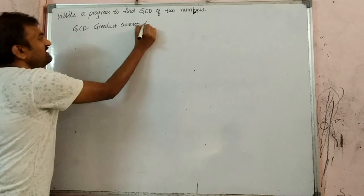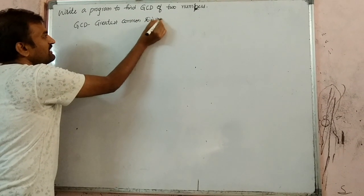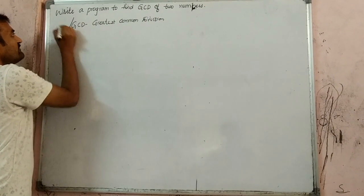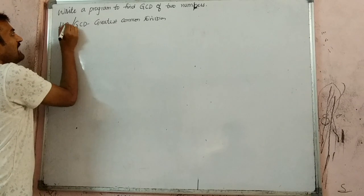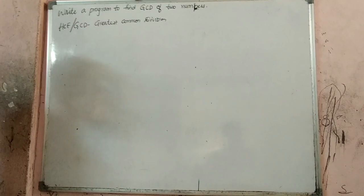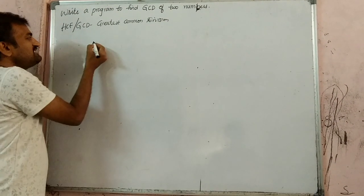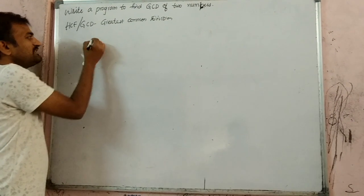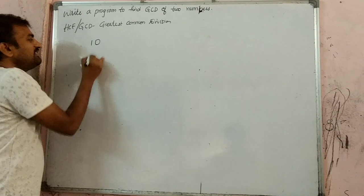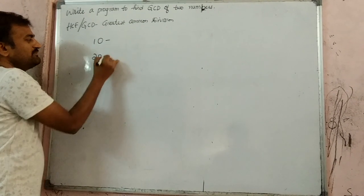So behind this, what is the logic? Sometimes we call it as HCF also — highest common factor. So the logic behind GCD: for example, I will take 10 and 20. These are the two numbers.